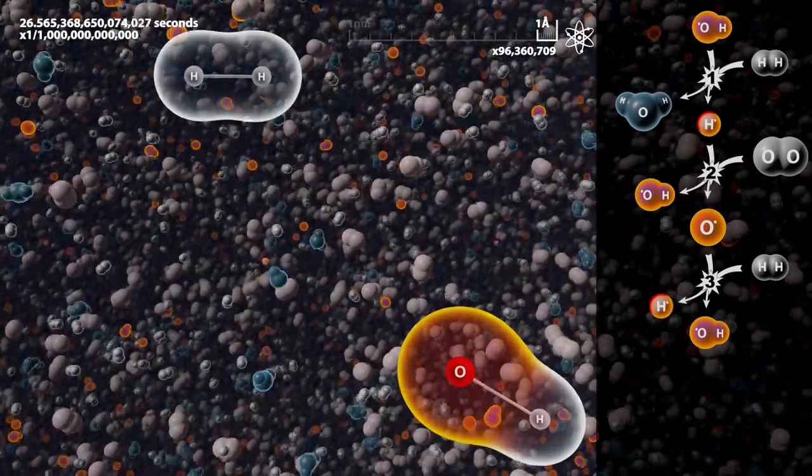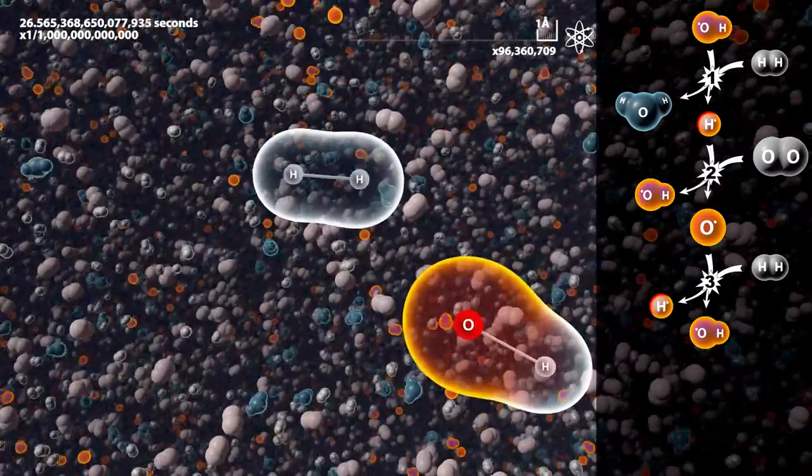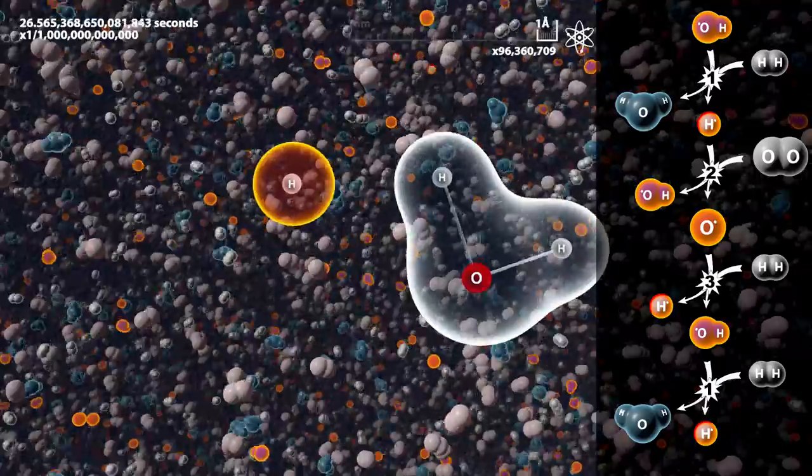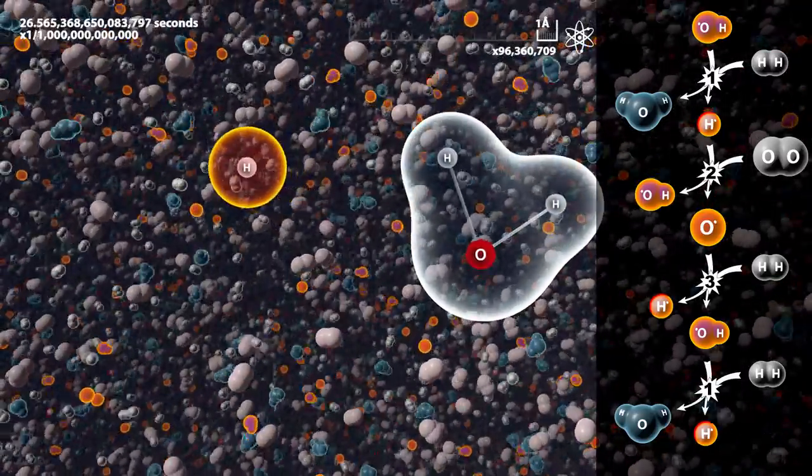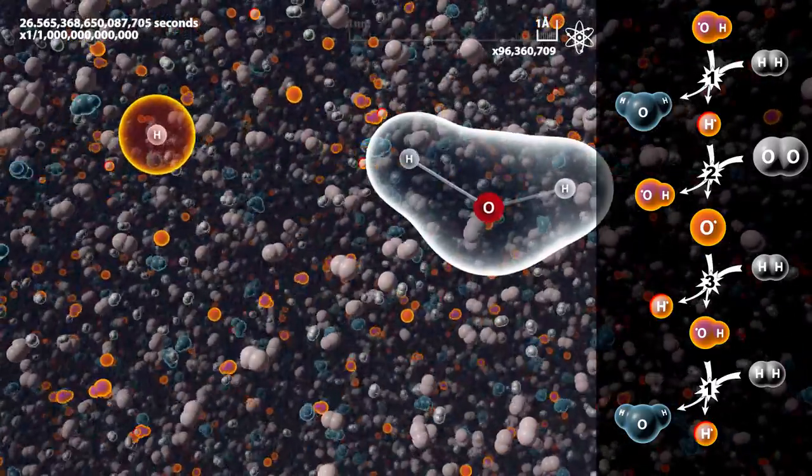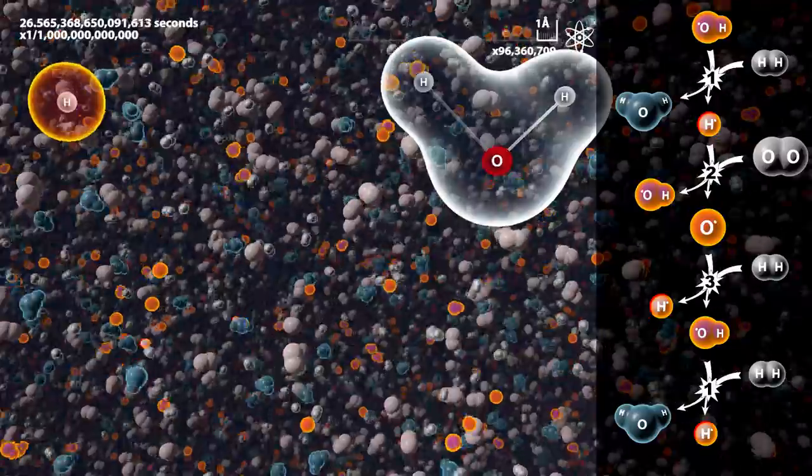At the next stage, the HO radical meets another hydrogen molecule. It takes one of the hydrogen atoms and finally turns into a water molecule. When the process is complete, we end up with another hydrogen atom, just as when we started, meaning that we have come full circle.